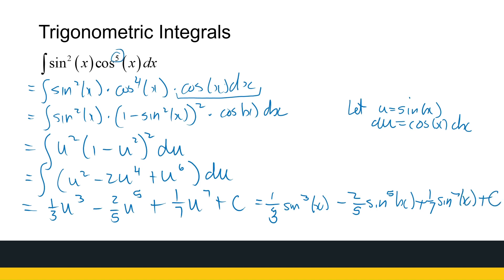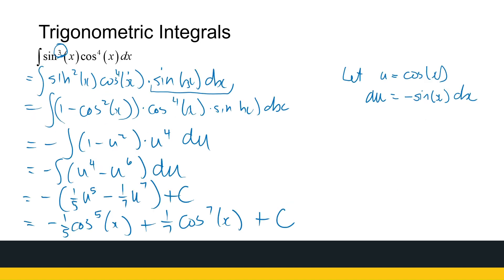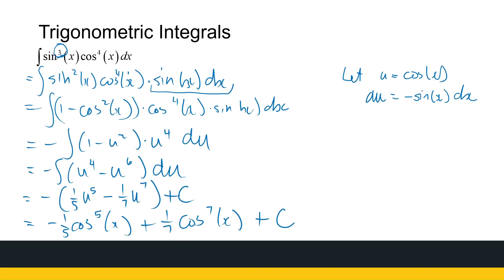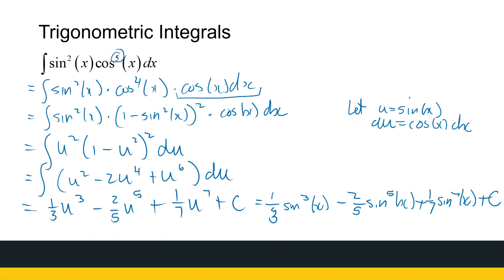Yet again, we identified the one with the odd exponent and took that one out. Going back to our first example done in two ways — both had odd exponents, which is why we could do it two ways; we just had to be strategic in which to choose. If sine has an odd exponent and cosine even, we take one of the sines out, and the other way around for cosine odd and sine even.